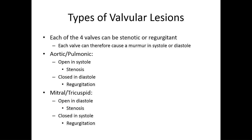The opposite is true for the mitral and tricuspid valves. They should be open in diastole, because that's when blood flows from the atria to the ventricles — so if there's stenosis of those valves, you get a murmur during diastole. And they should be closed during systole, so a regurgitant lesion involving those valves will create a murmur in systole. So each valve can create a murmur in systole or diastole, depending on what type of lesion it is.